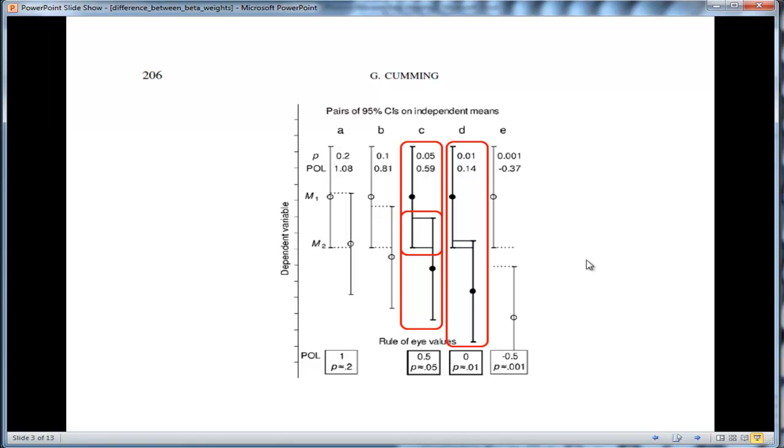How do you test the difference between two beta weights, which are standardized in nature? Because the sampling distribution of standardized estimates, point estimates, is not the same as unstandardized point estimates. And so, let's look at an example.